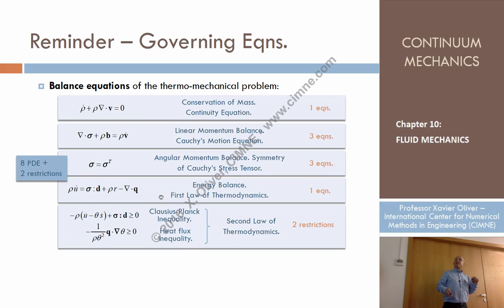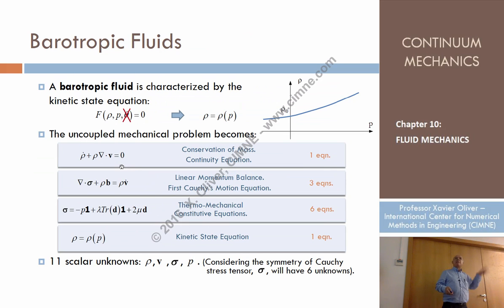From all the equations we have just seen, we can just pick up a number of them. Typically the continuity equation, which is one equation. The linear momentum balance, the Cauchy's equation, which are three equations. The thermomechanical constitutive equation, which for Newtonian fluids is that one, which is six equations. I've already considered the symmetry of sigma here. And then this equation, which is the version of the kinetic state equation for barotropic fluids. And look, if we count here, we count that we have 11 equations with only 11 unknowns.